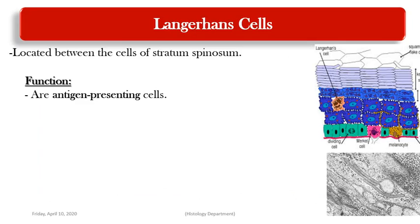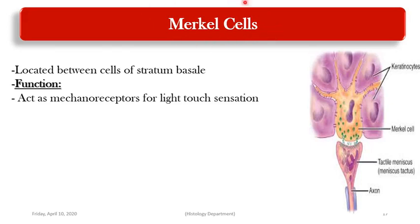The Langerhans cell is present in the stratum spinosum layer and acts as an antigen-presenting cell. The third non-keratinocyte is the Merkel cell, located in the stratum basale layer. The Merkel cell acts as a mechanoreceptor — a myelinated nerve fiber loses its myelin sheath and comes into contact with the Merkel cell to form Merkel receptors, which are responsible for light touch sensation.